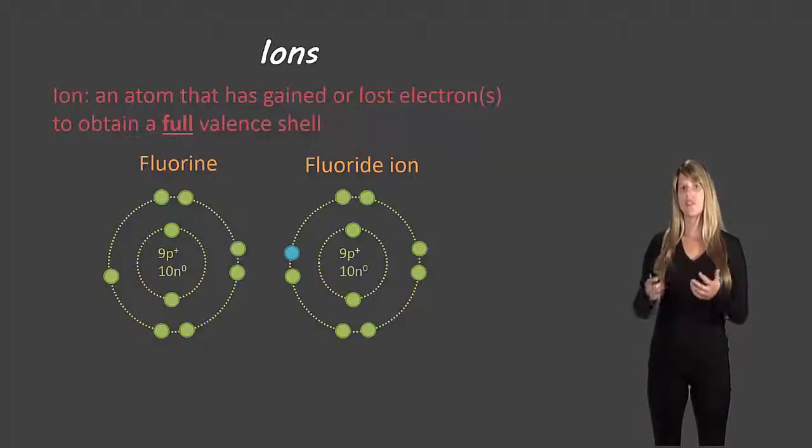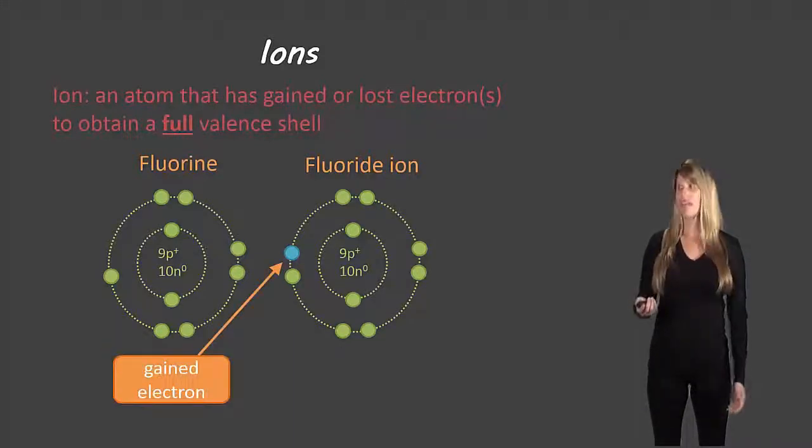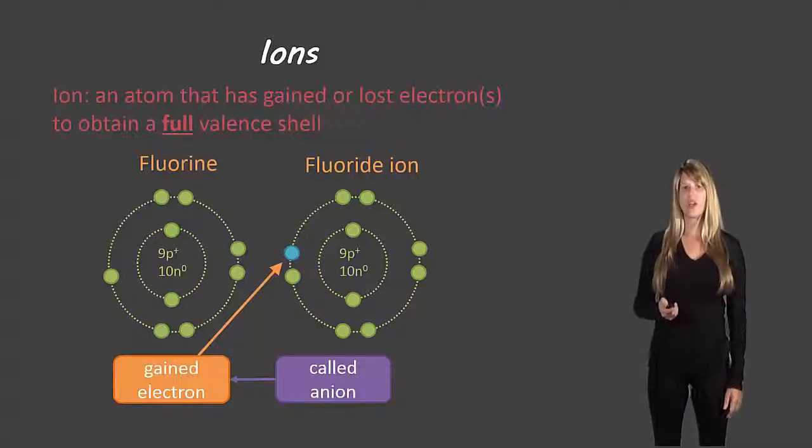Now if you notice the names there, fluorine turns into fluoride ion. So when you gain electrons, the atom changes the ending from -ine or whatever the ending happens to be—if it was oxygen, then it's the -ygen part of oxygen—and it changes to -ide and then the word ion appears afterwards to indicate that it's an ion. So it has gained one electron and we call this an anion. Atoms that have gained one or more electrons are referred to as anions.